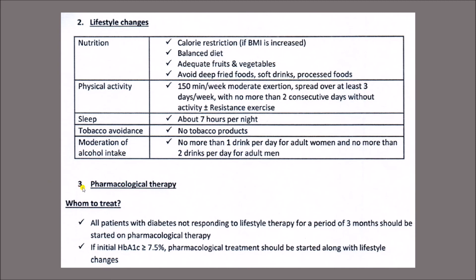Regarding pharmacological therapy: all patients with diabetes not responding to lifestyle therapy for three months should be started on pharmacological therapy. When a person is diagnosed with diabetes, lifestyle changes are tried first for at least three months before starting medication. However, if there is no control of blood sugar after three months of lifestyle modification, or if the initial HbA1c level is more than 7.5%, then medication should be started right away.